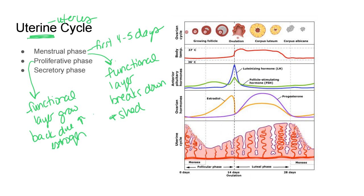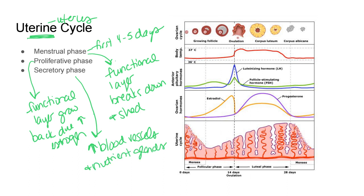The final part is the secretory phase, during which the regrowth starts to slow down but a large blood supply is brought to the area. There's an increase in blood vessels and nutrient glands laid down — all in preparation to help nourish a developing fetus. This is happening due to that increase in progesterone coming from the corpus luteum during the luteal phase of the ovarian cycle.